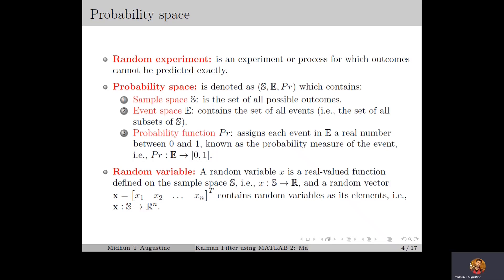First of all, a random experiment is an experiment or process for which the outcomes cannot be predicted with certainty. This means there will be multiple possible outcomes for the experiment and we cannot exactly predict which outcome we get at each time. Examples of random experiments are tossing a coin and rolling a dice. For tossing a coin, the possible outcomes are head and tail, and at each time we repeat the experiment, we may either get a head or a tail.